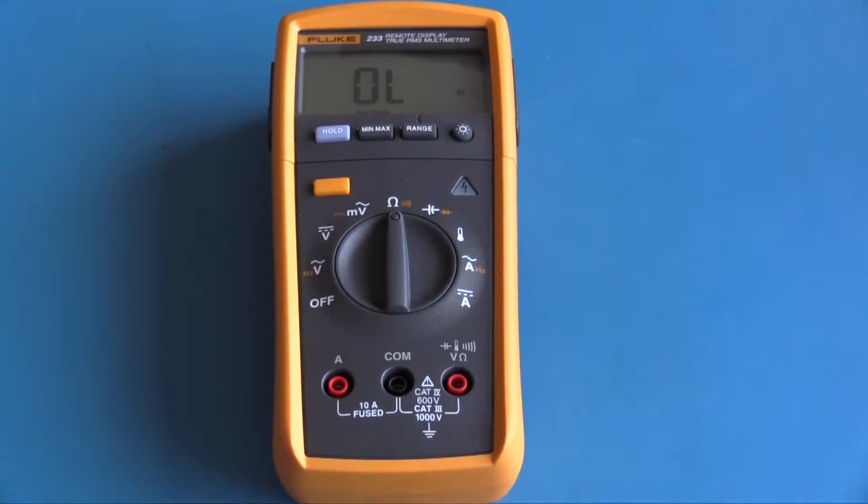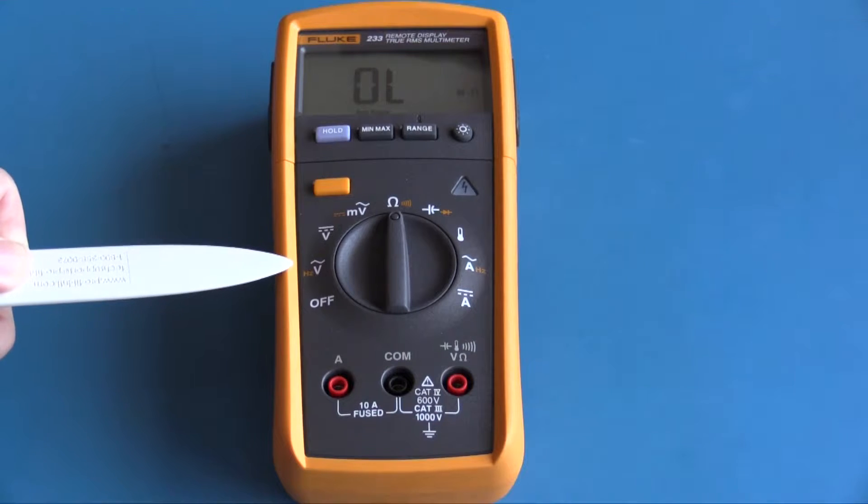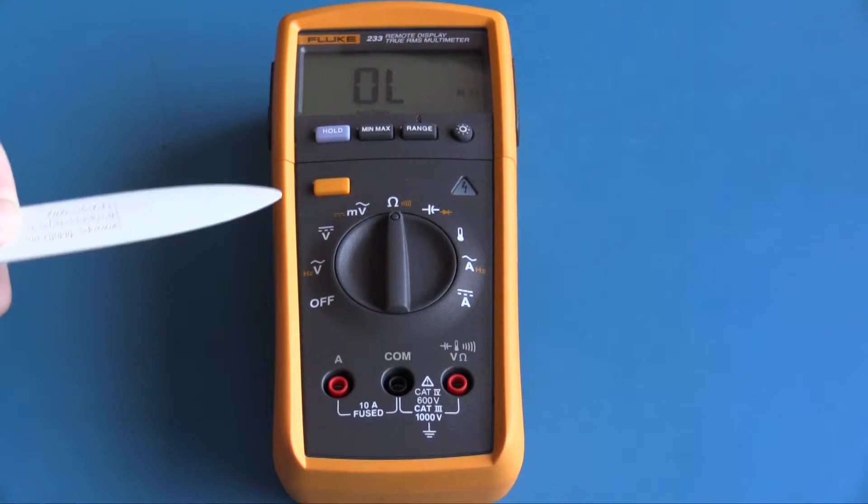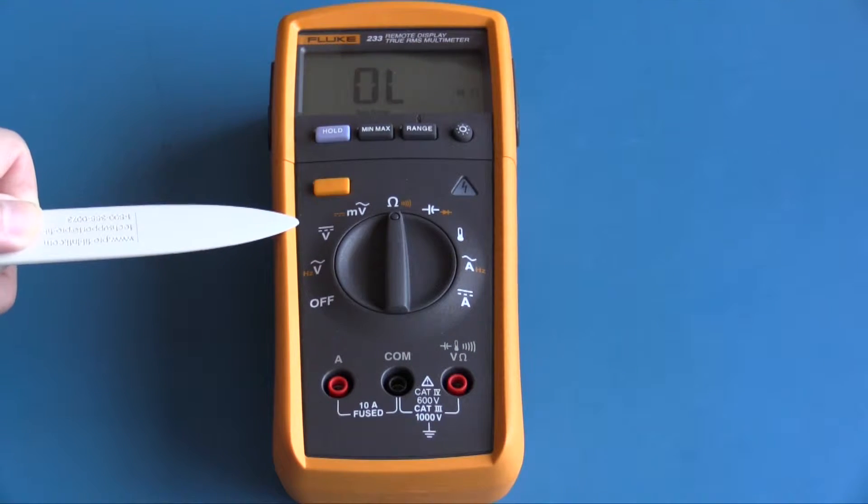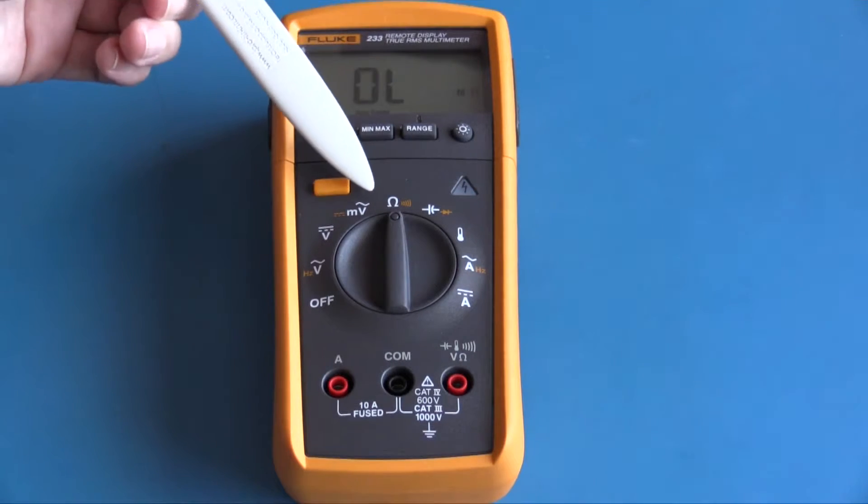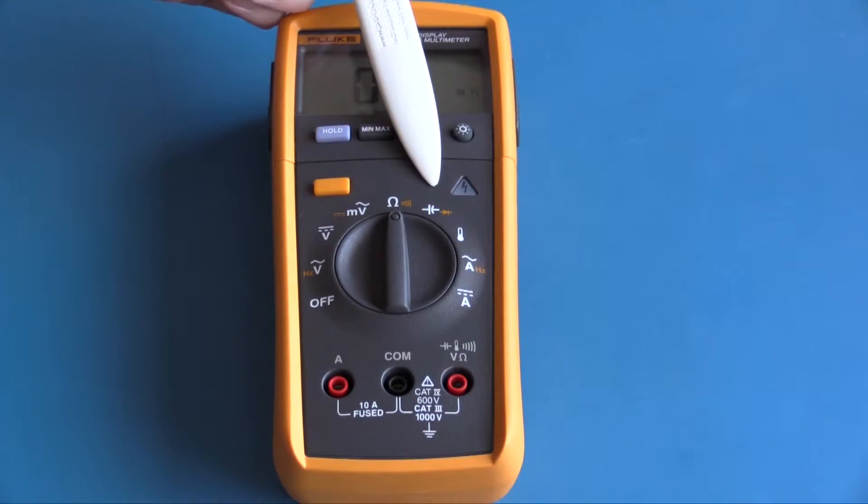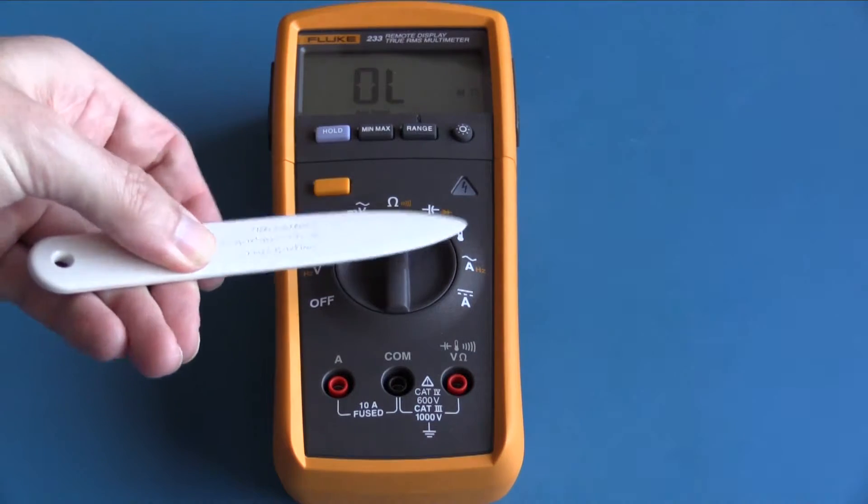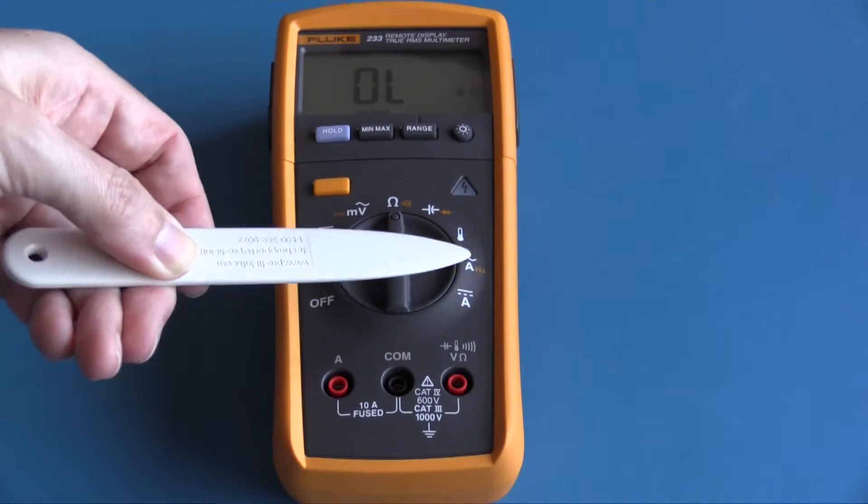This is the Fluke 233 digital multimeter with remote display. It has your normal basic ranges: AC voltage and hertz, DC voltage, DC and AC millivolts, ohms and continuity, capacitance and diode, temperature, amps AC and hertz, and amps DC.